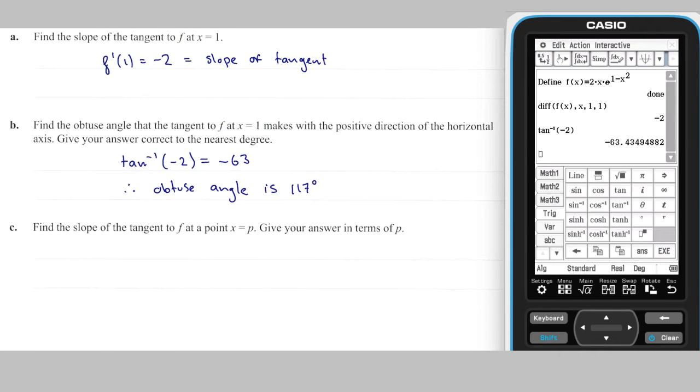Part c: For the slope of the tangent at the point where x = p, I can edit the ClassPad command I used in part a, changing the point 1 to point p.